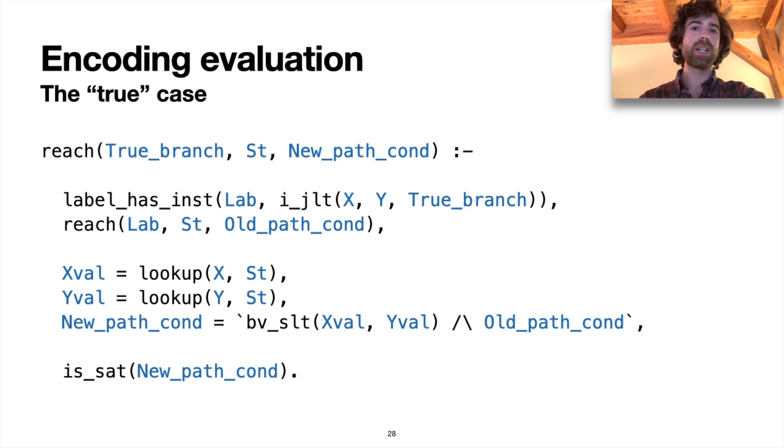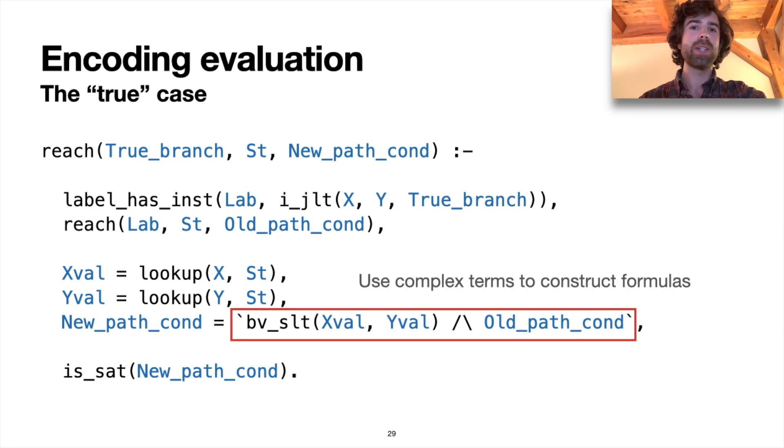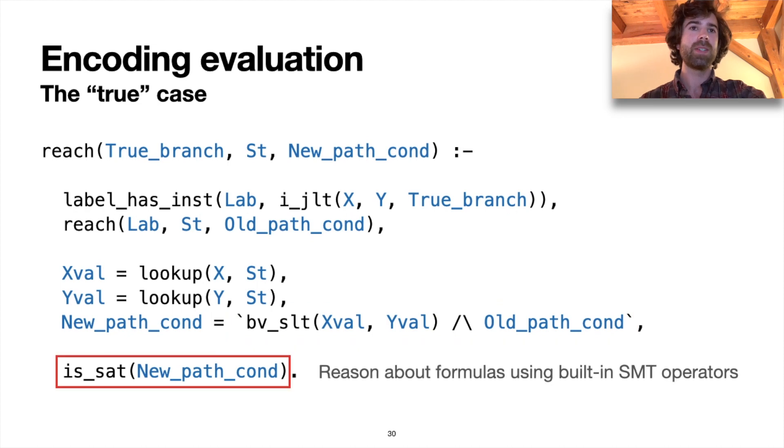So a couple things to note here. One is that we're using complex terms to represent SMT formulas like this conjunction. The second is that we use these built-in SMT operators for reasoning about SMT formulas, for example, for checking satisfiability. So this is the rule defining the true case at a conditional jump.